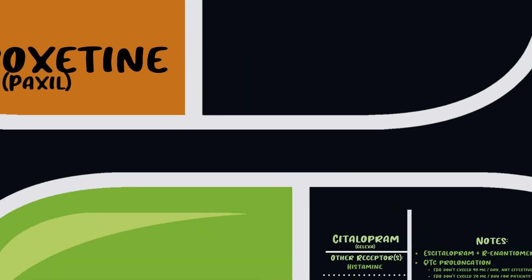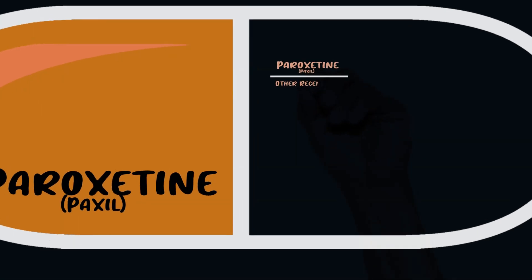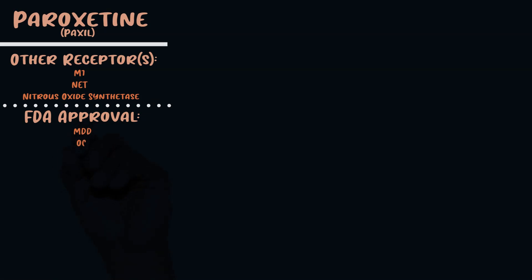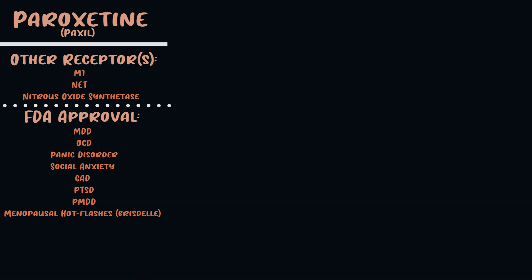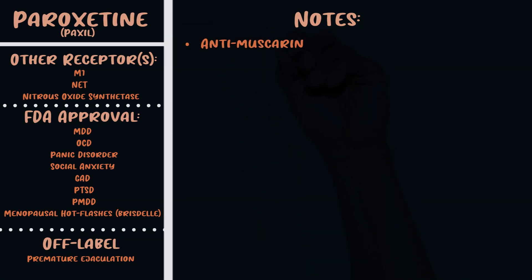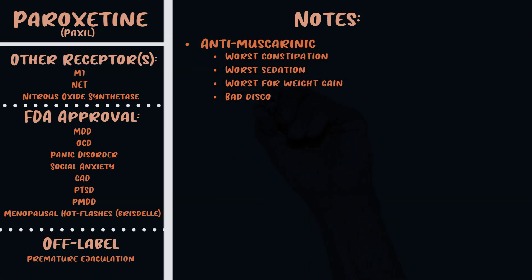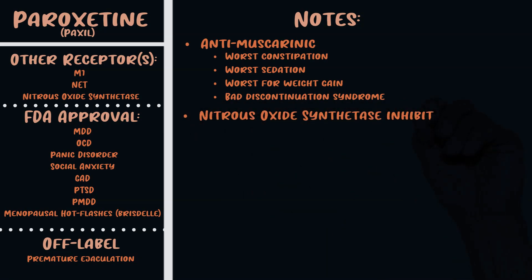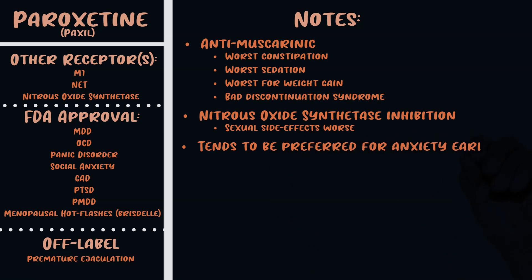The last SSRI is paroxetine, or Paxil. The other receptors it hits are M1 (muscarinic), NET, and nitric oxide synthetase. It's FDA approved for MDD, OCD, panic disorder, social anxiety, GAD, PTSD, PMDD, and menopausal hot flashes (sold as Brisdelle), and used off-label for premature ejaculation. The most important thing to remember is its anti-muscarinic effects, which explain why it's the worst for constipation, has the worst sedation, the worst weight gain, and likely contributes to its particularly bad discontinuation syndrome.